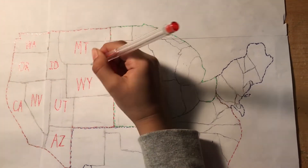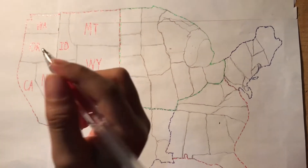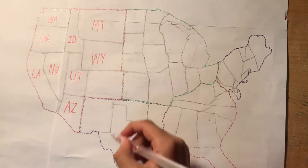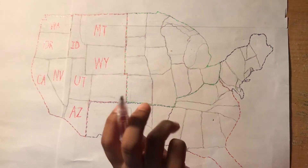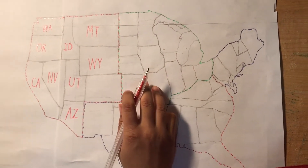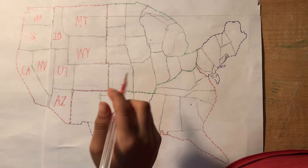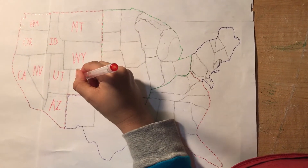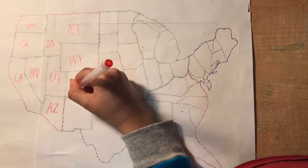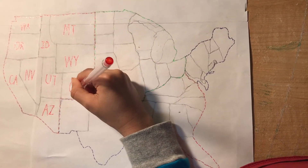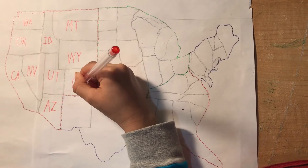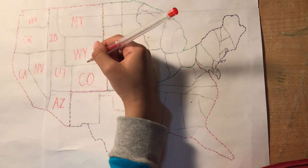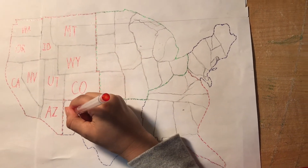And then I have Montana, and at the bottom of Montana we have Wyoming. Wyoming is the state with the least population in the US. The full USA actually has the third largest population in the world. And then I have Colorado. After that I have New Mexico.